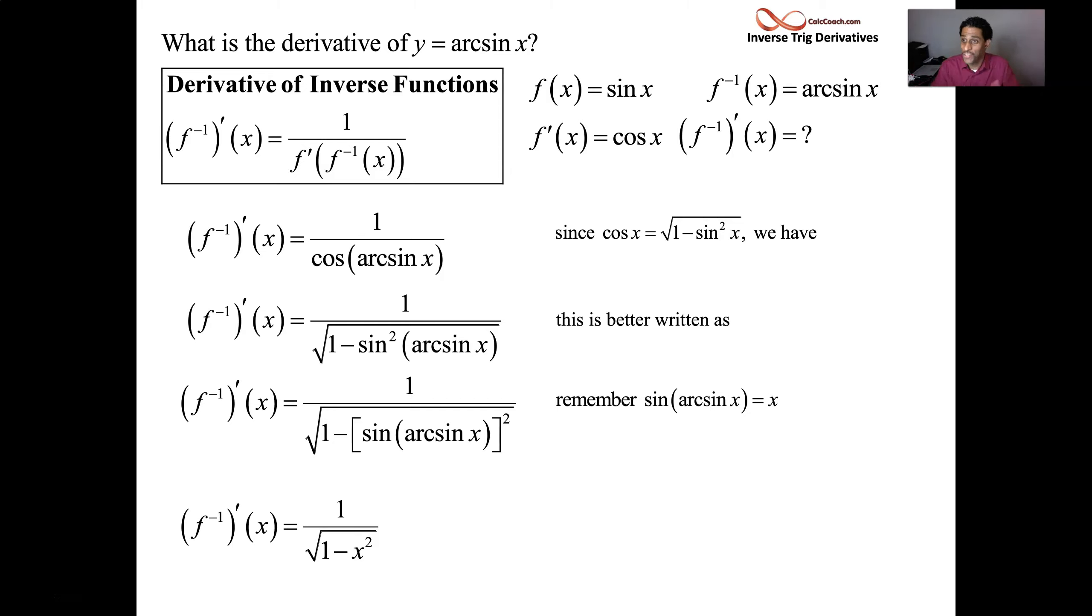So then we have the derivative of the arc sine function. It has no trig in it at all. It's 1 over the square root of 1 minus x squared. To add this to your library of functions, if your function is arc sine x, its derivative is 1 over √(1 - x²).